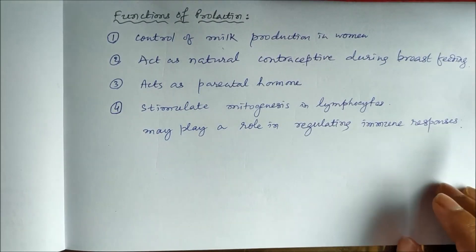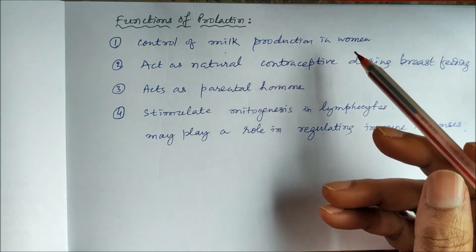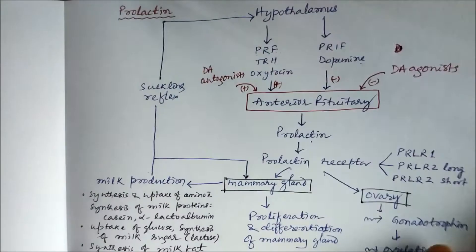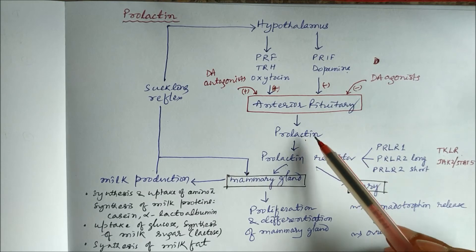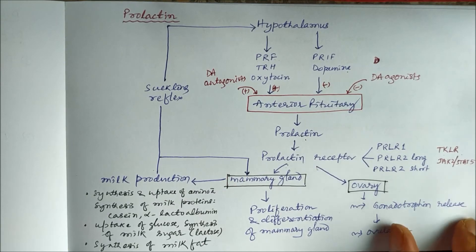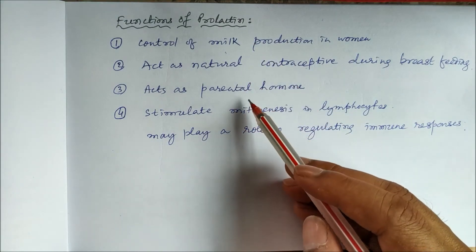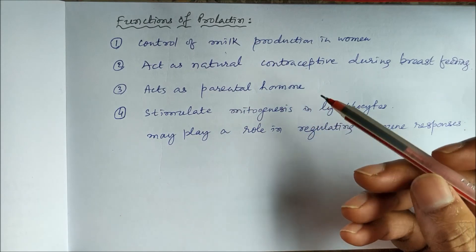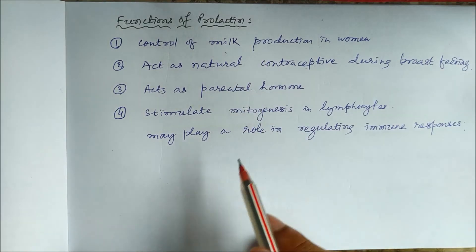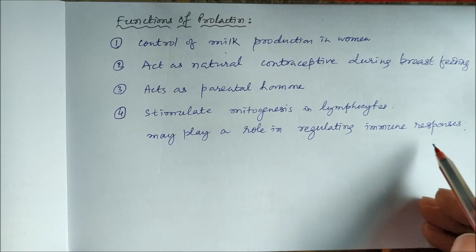The functions of prolactin include: first, controlling milk production in women; second, acting as a natural contraceptive during breastfeeding by causing inhibition of ovulation. Prolactin also acts as a parental hormone — it promotes maternal care of the baby. Additionally, prolactin stimulates mitogenesis in lymphocytes, so it may play a role in regulating the immune response.